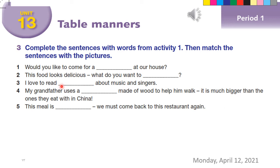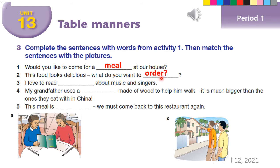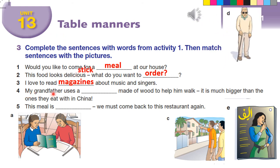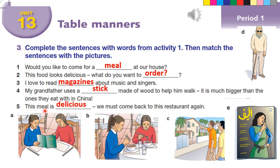Answer review — one: Would you like to come for a meal at our house? Two: This food looks delicious, what do you want to order? Three: I love to read magazines about music and singers. Four: My grandfather uses a stick made of wood to help him walk, it is much bigger than the ones they eat with in China. Five: This meal is delicious, we must come back to this restaurant again.